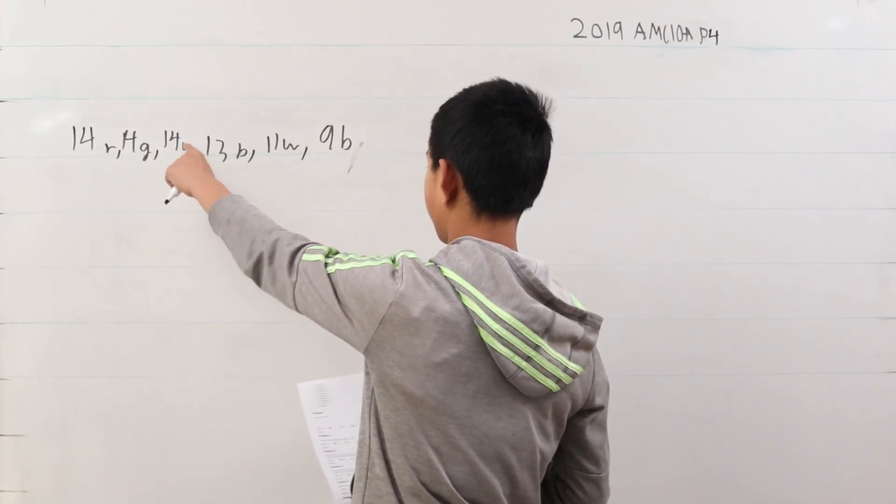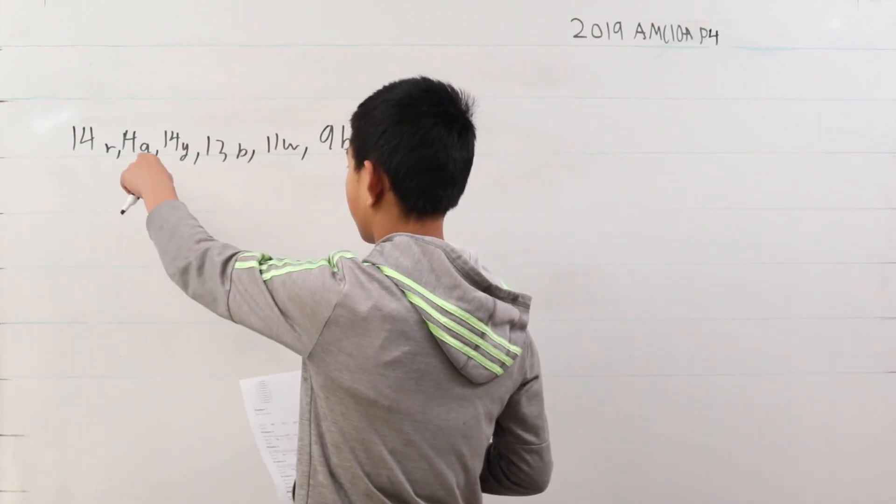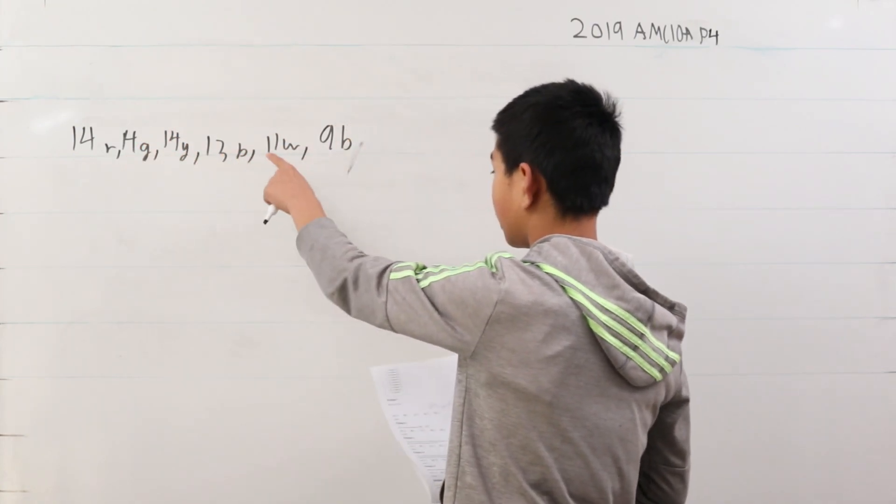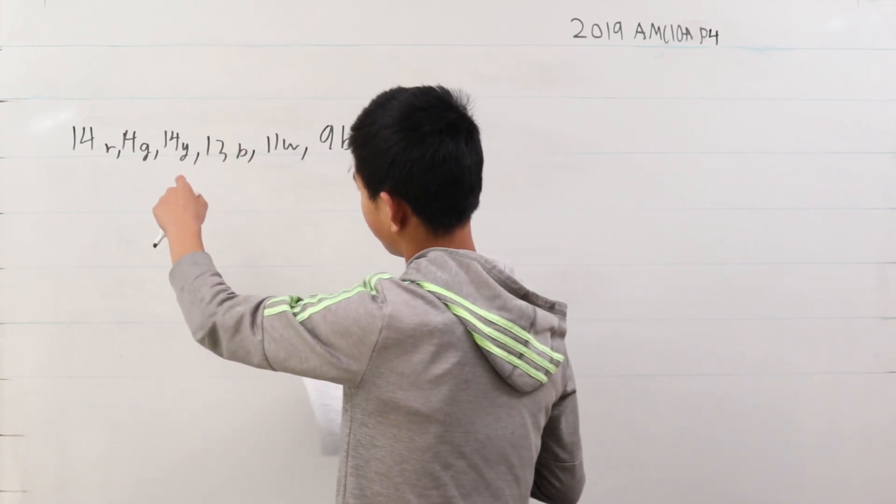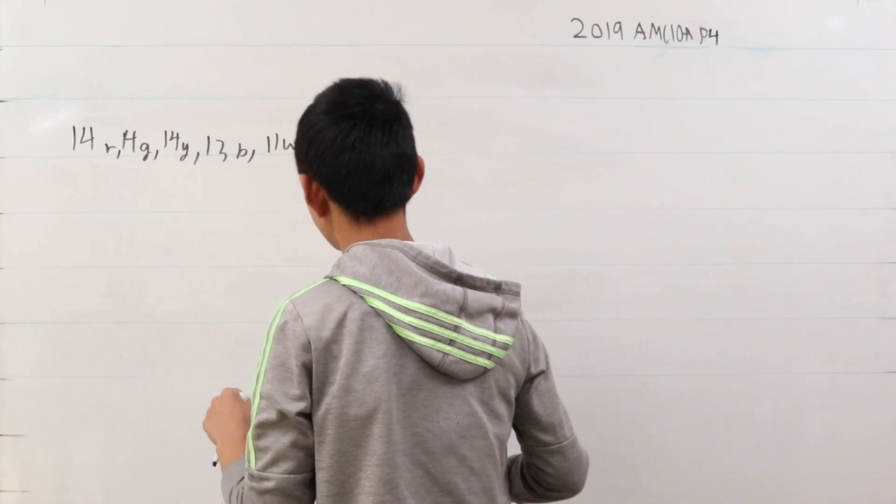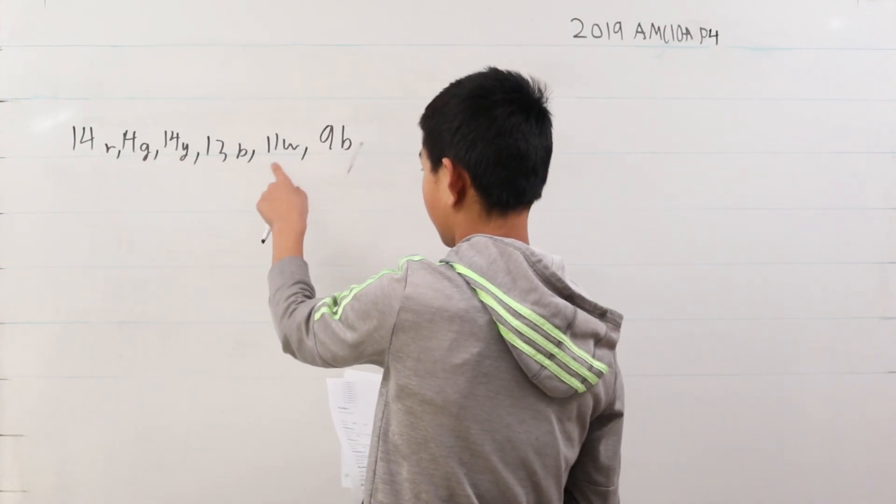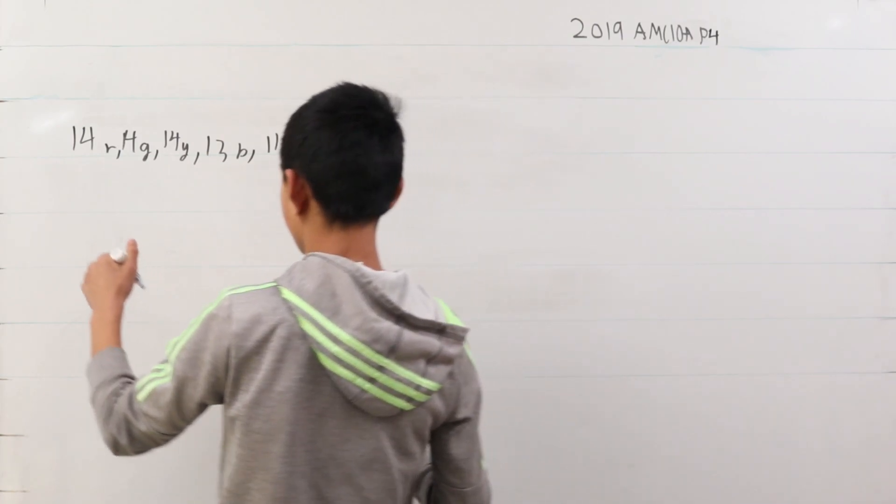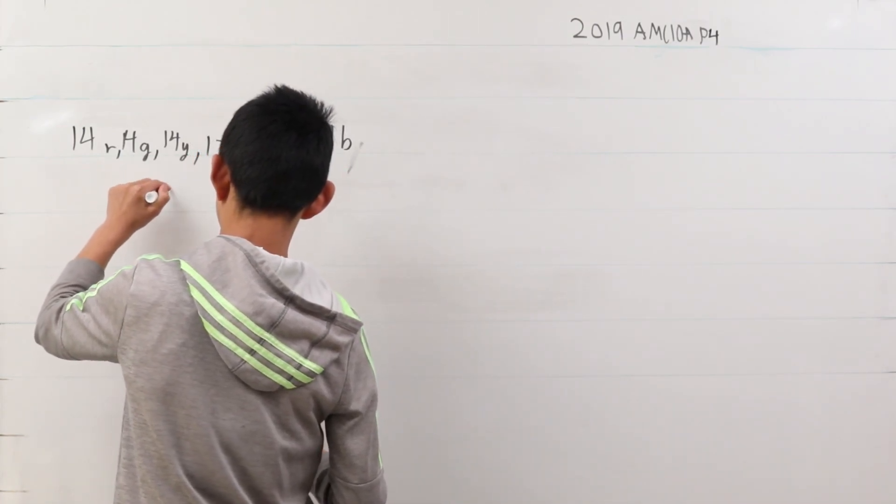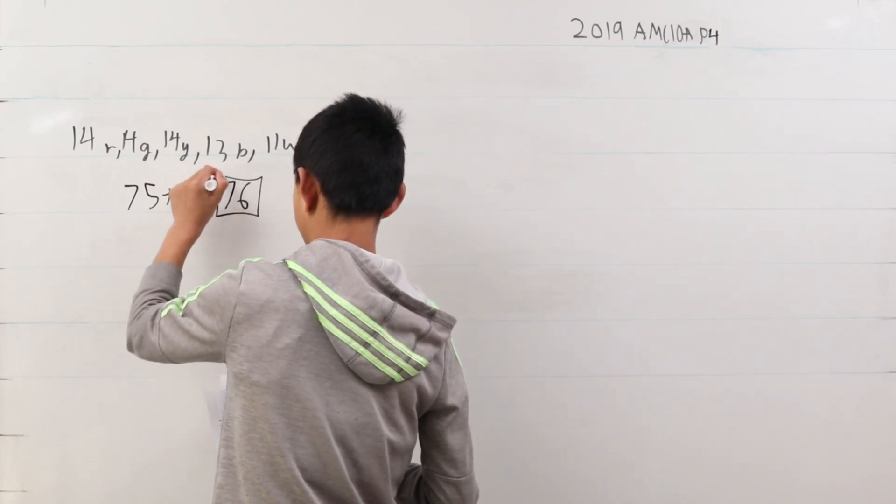Since there are 14 from each of these colors and we picked out all of the other colors, the next ball we draw has to be one of red, green, or yellow. When you add it up, there are 75 balls, so 75 plus 1 gives us our answer of 76 balls minimum.